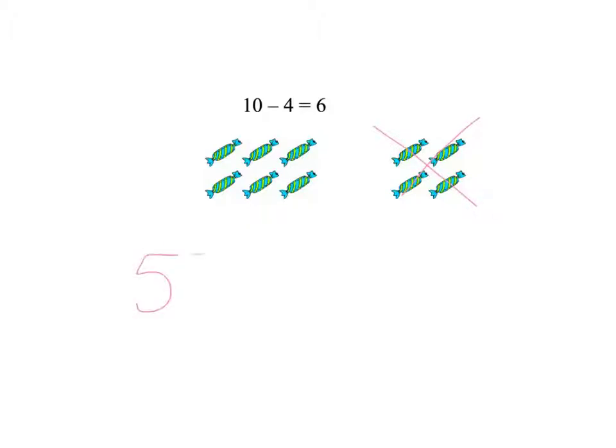However, if we wanted to use the same idea to do something like 53 minus 5, it's going to take us forever. Because we would have to draw 53 sweets, then cross out 5 of them and count how many were left and that's really going to take far too much time. So we need a more efficient way of thinking about that. And to do this we're going to use the number line.